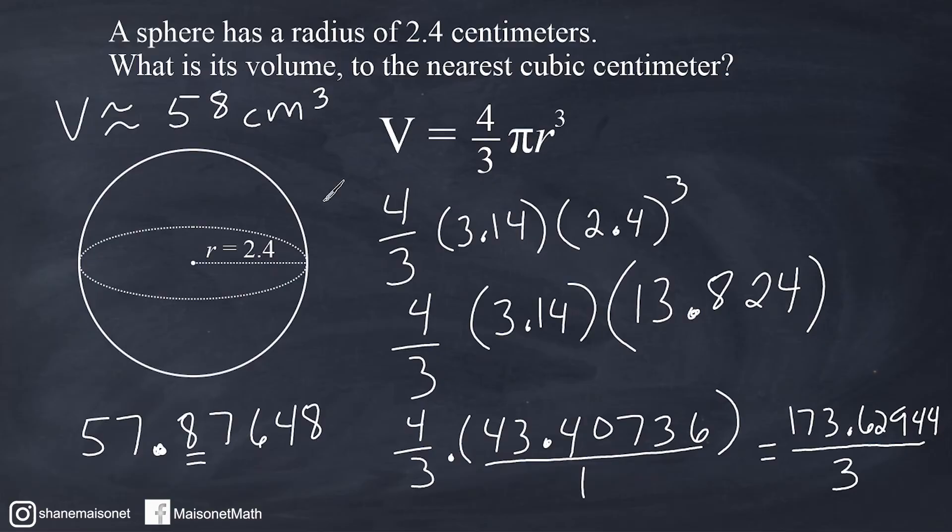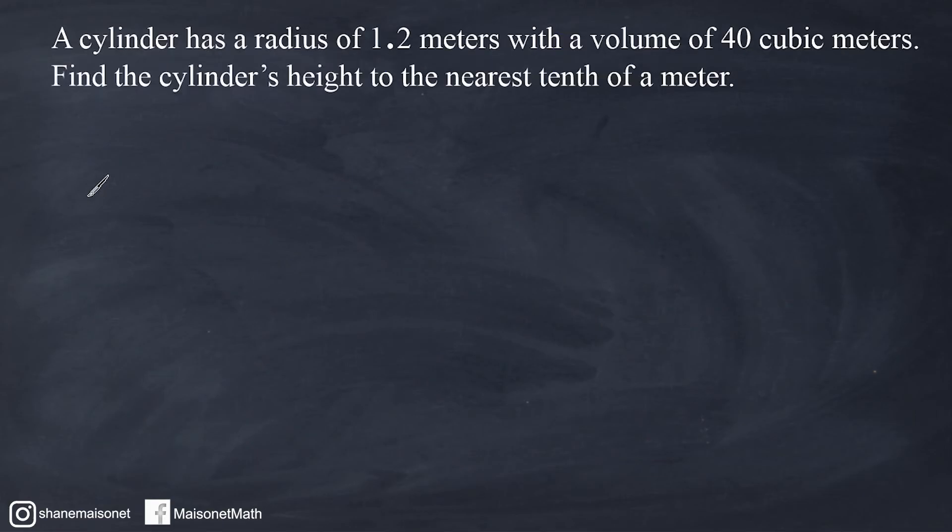Let's go ahead and do one more example that involves volume. This problem reads that a cylinder has a radius of 1.2 meters with a volume of 40 cubic meters. Find the cylinder's height to the nearest tenth of a meter.